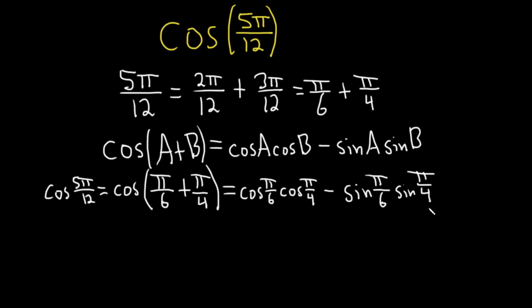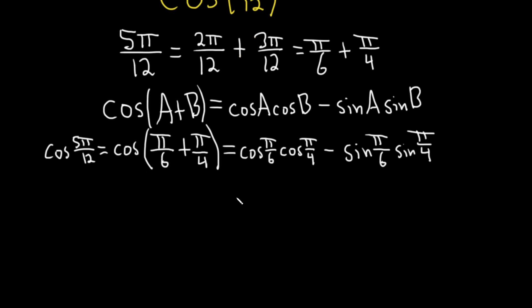The cosine of π over 6 is square root of 3 over 2. And this is just from memory. The cosine of π over 4 is the square root of 2 over 2. Minus, sine of π over 6 is 1 half. Sine of π over 4 is the square root of 2 over 2. So just applying these formulas from memorization.